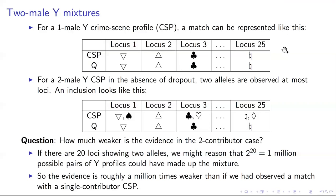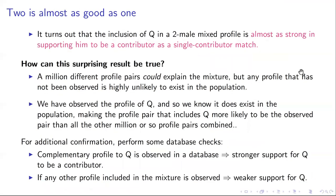Our surprising result is that we think the evidence is hardly weaker at all. When Q is fully included in a two-male mixed profile, it is almost as strong evidence of him being a contributor as a single contributor match. Here's the intuition: yes, there are a million different profile pairs that could explain the mixture, but any particular profile that has not been previously observed is highly unlikely to exist in the population.